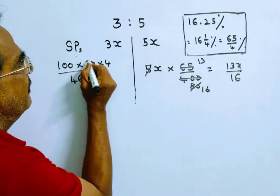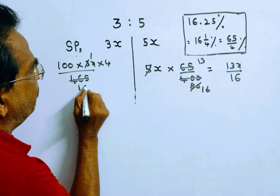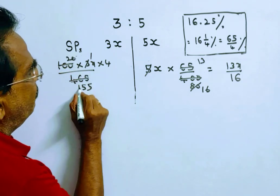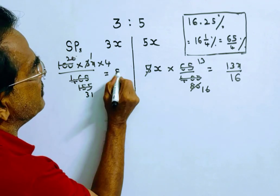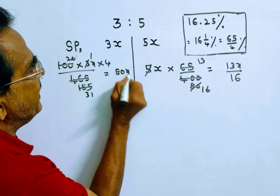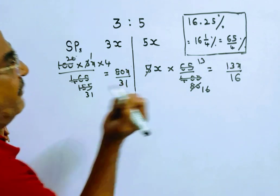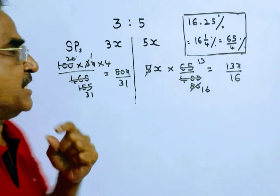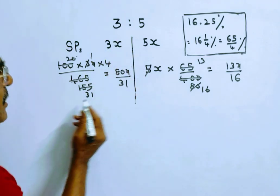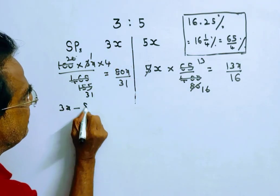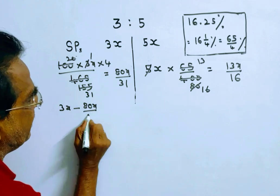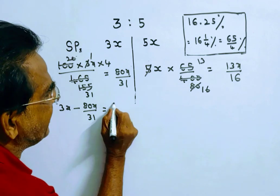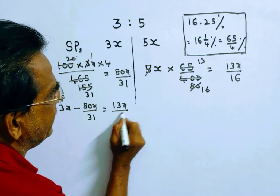The 4 comes to the numerator. So the cost price is equal to 80x/31. Now let us see the profit earned by the first salesman: selling price minus cost price = 3x minus 80x/31. That equals 93x/31 minus 80x/31, which gives 13x/31.